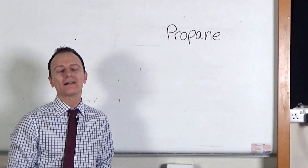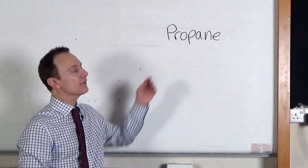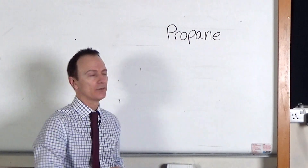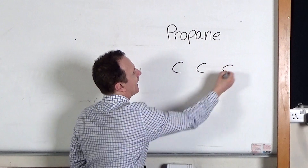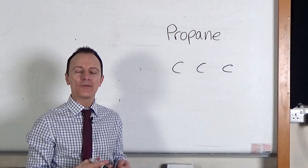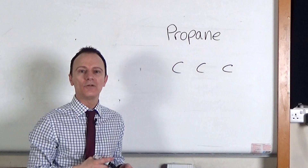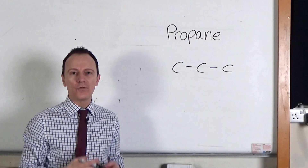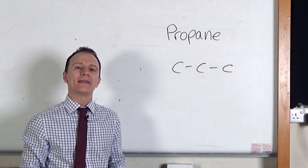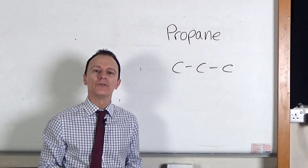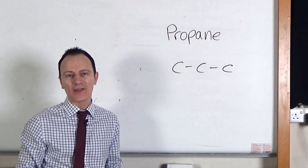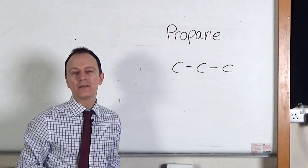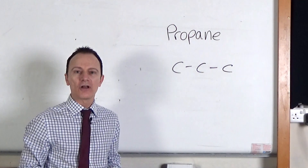I'm now going to show you how to draw alkane molecules. Let's start off with propane. The 'prop' part tells me there's three carbon atoms in the molecule, so I'm going to draw those in first. And the 'ane' tells me it's an alkane, and I know that alkanes have only got single bonds between their carbon atoms. Now each carbon atom is going to make four covalent bonds, because it's in group four of the periodic table, so it's got four electrons on its outer shell. Therefore it needs four more electrons to get a full outer shell, so every carbon makes four strong covalent bonds.